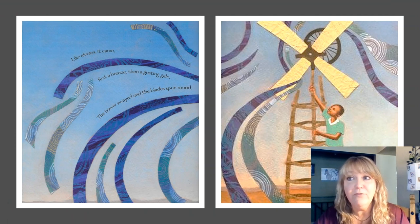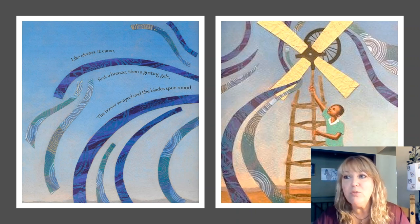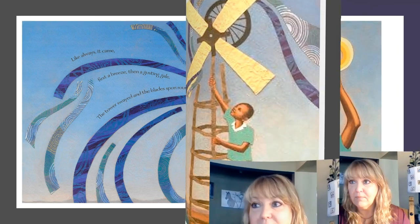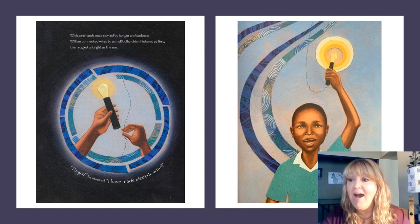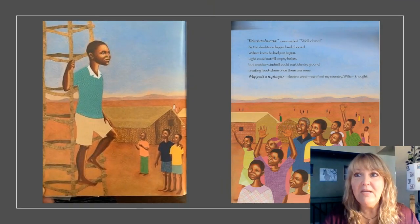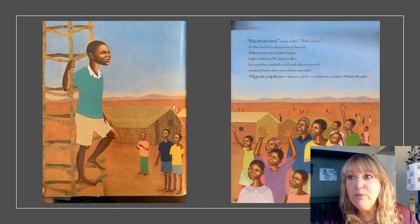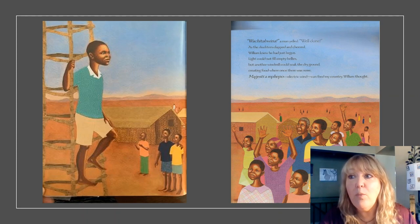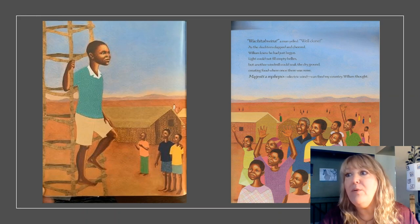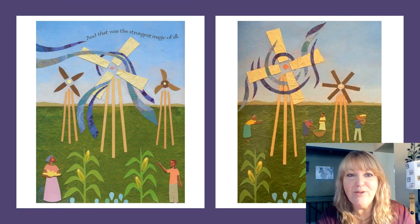Like always it came — first a breeze, then a gusting gale. The tower swayed and the blades spun around. With sore hands once slowed by hunger and darkness, William connected wires to a small bulb, which flickered at first, then surged as bright as the sun. Tonga! he shouted. I have made electric wind! Wa kitabuina! a man yelled. Well done. As the doubters clapped and cheered, William knew he had just begun. Light could not fill empty bellies, but another windmill could soak the dry ground, creating food where once there was none. Electric wind can feed my country, William thought. And that was the strongest magic of all.